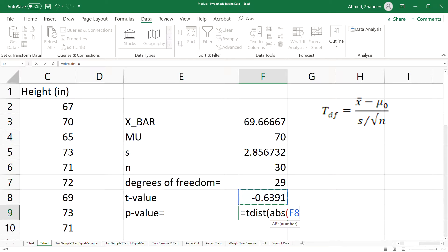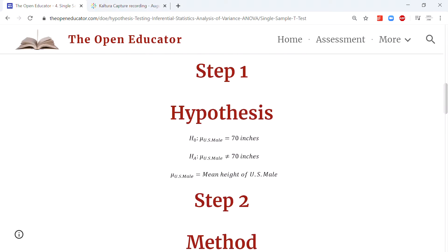Comma, degrees of freedom - this one - and then tails. Now this is a two-tail test, and the tail depends on the alternative hypothesis. If you go to theopeneducator, it has the step-by-step process. In the alternative hypothesis, we said that it's not equal.